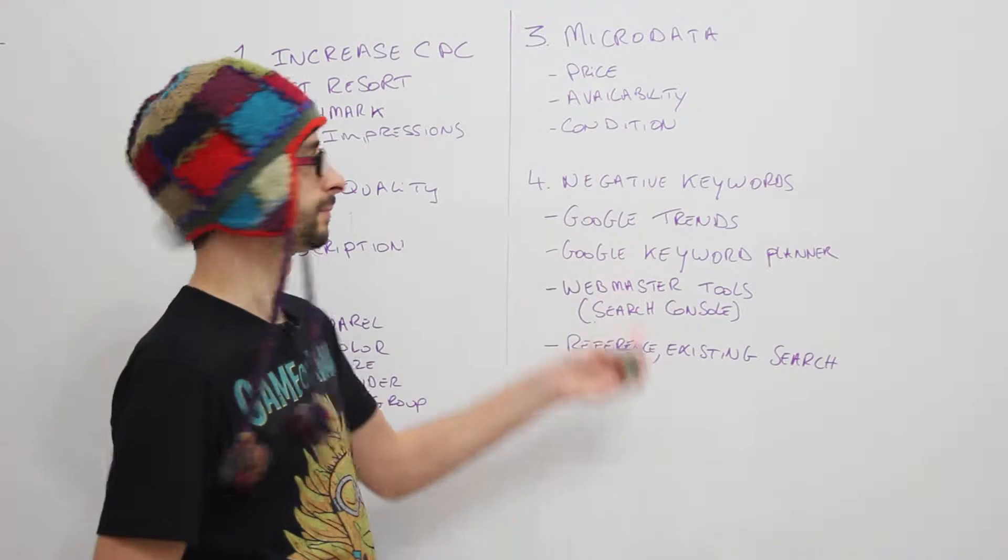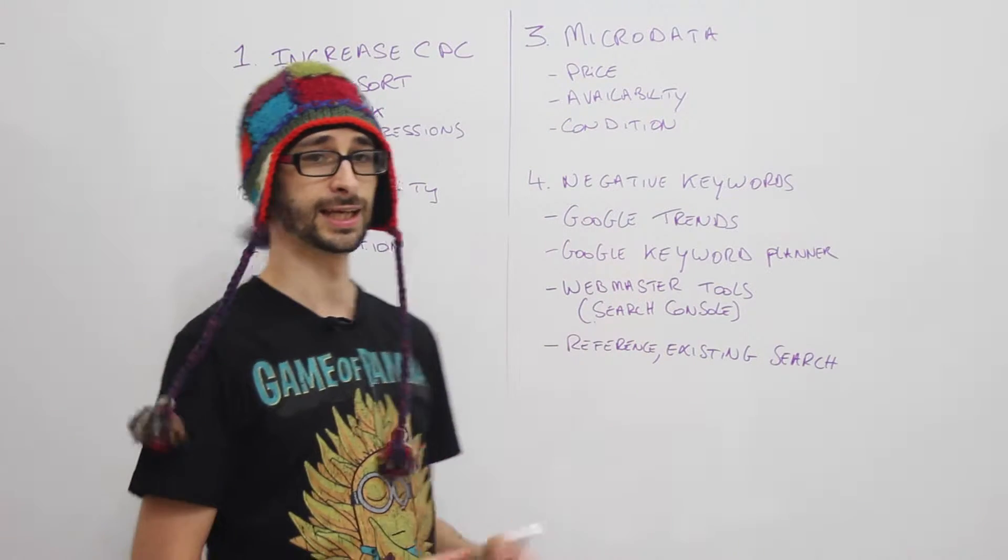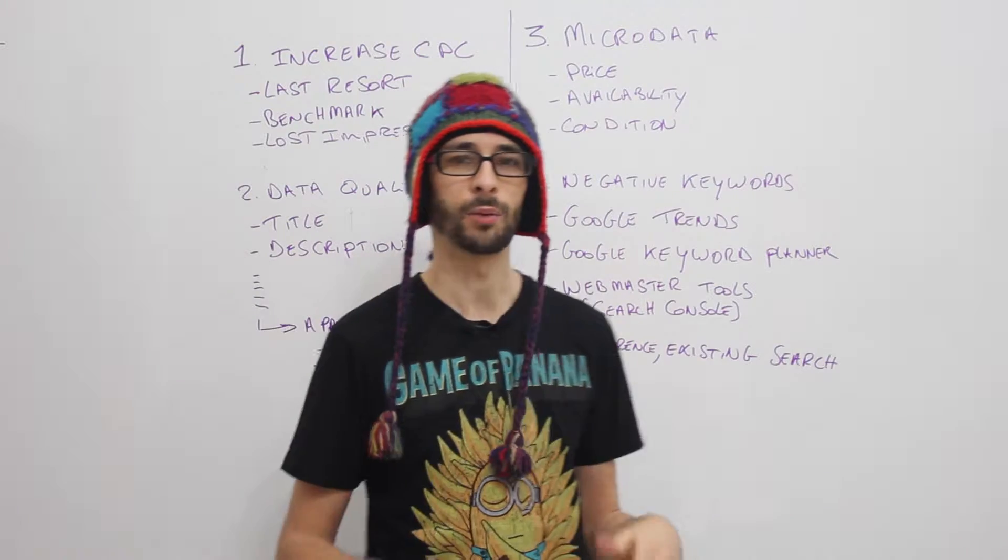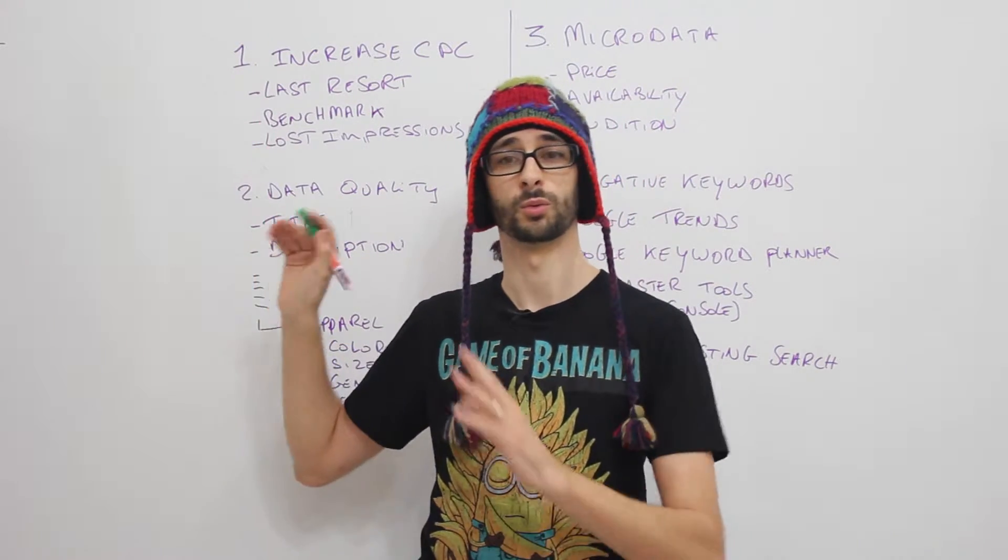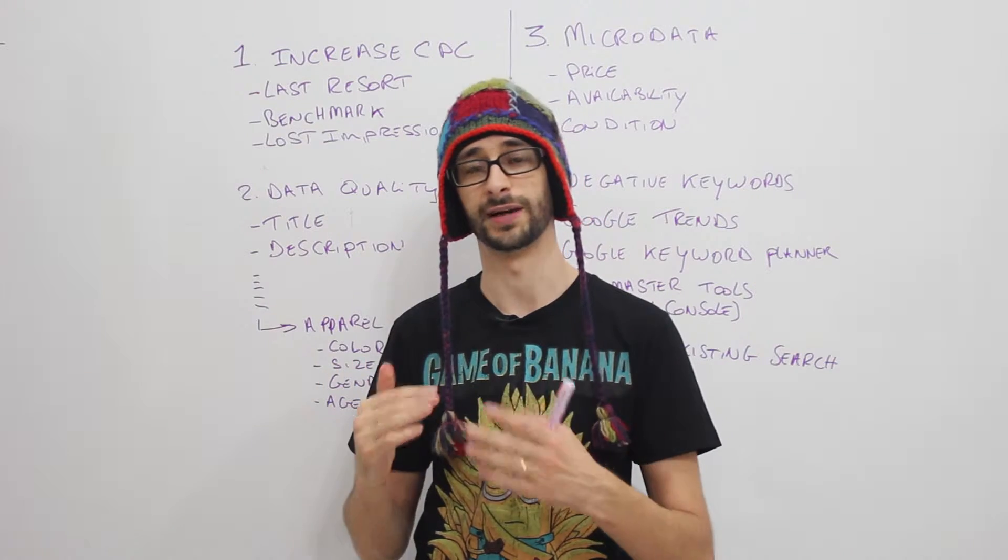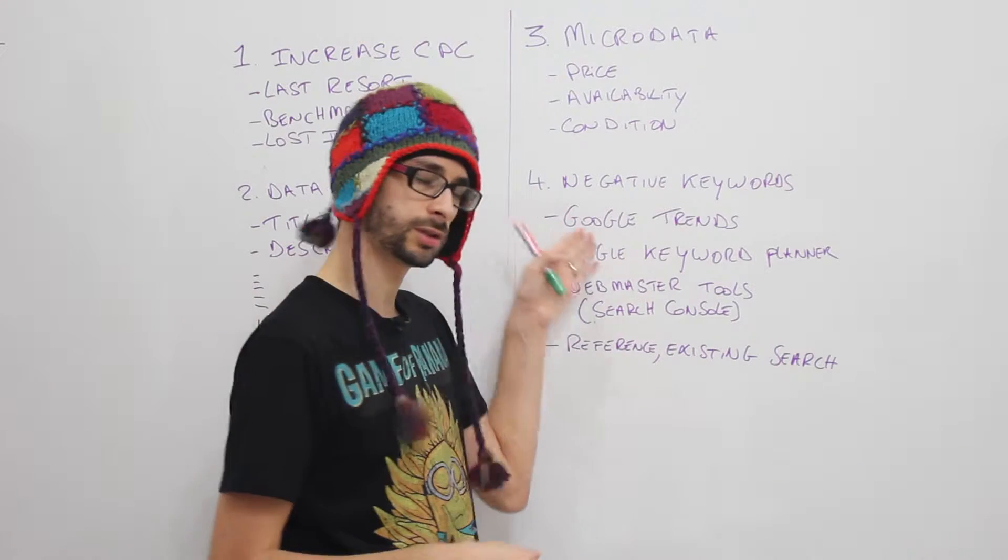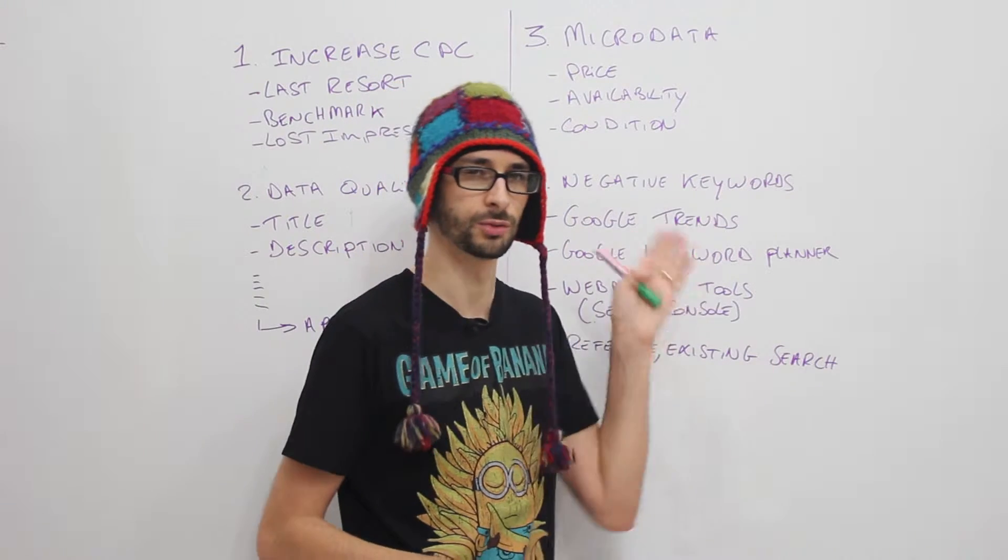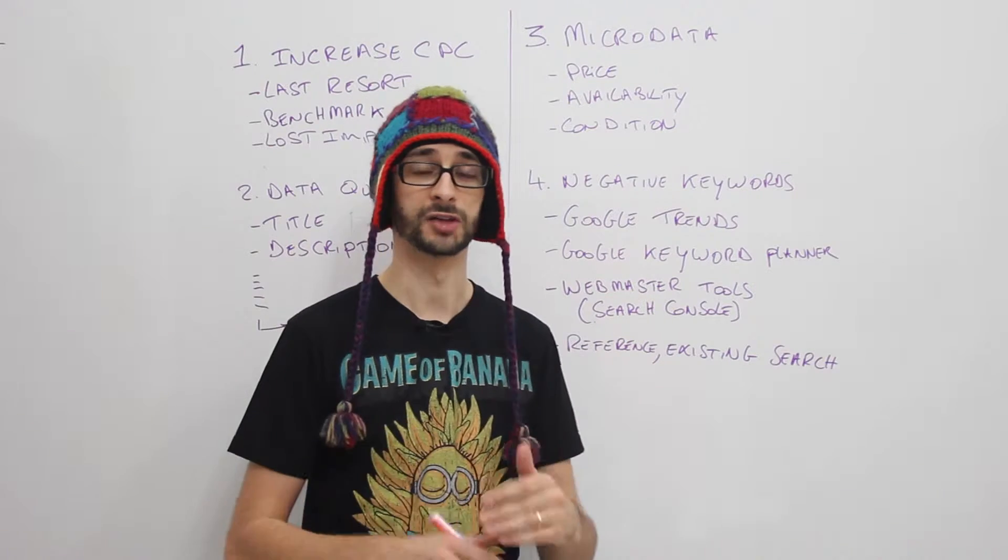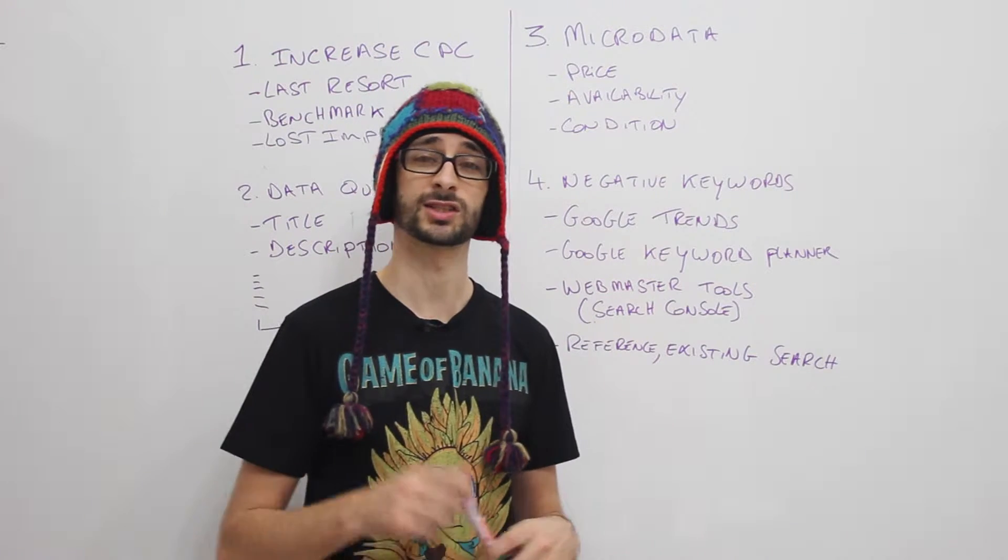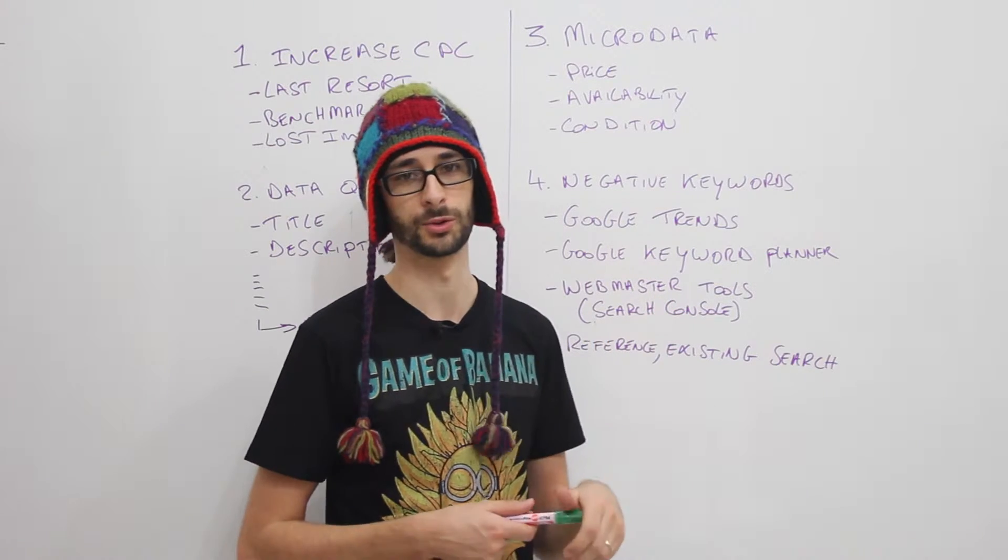So we've got four categories: the negative keywords, microdata, data quality, and increased CPC. I will put increased CPC as number one because that's the most obvious, but I want to go with number four first, three, two, one, so that we can eliminate having a too high CPC because you can change the CPC by actually going the other route.